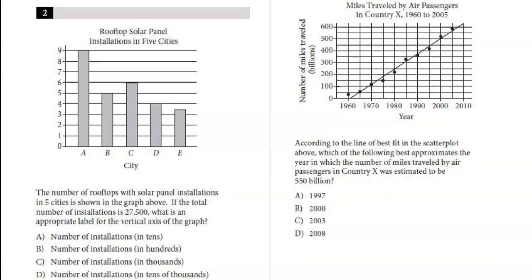Number two, rooftop solar panel. The number of rooftops with solar panel installations in five cities is shown in the graph above. If the total number of installations is 27,500, what is an appropriate label for the vertical axis? Remember, vertical is the up and down axis over here of the graph. Notice these numbers are just single digit numbers, and we're trying to get 27,500. It looks like these numbers over here are going to have to be in thousands.